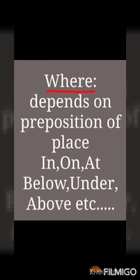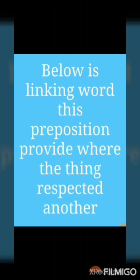Where — preposition of place. Examples: in, on, at, below, under, above, etc. See one example: 'The plane is just below the cloud.' Where is the plane? Below the cloud. 'Below' is the linking word. This preposition shows where one thing is in relation to another.